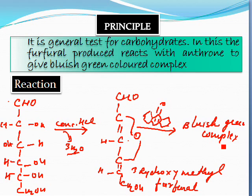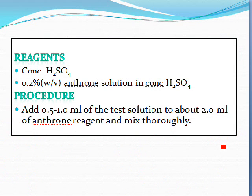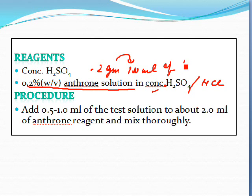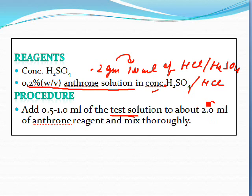The material required for the anthrone test is a 0.2% weight-by-volume anthrone solution in concentrated sulfuric acid or HCl — meaning 0.2 grams of anthrone dissolved in 100 ml of sulfuric acid or HCl. For the procedure: add 0.5 to 1 ml of the carbohydrate test solution to 2 ml of anthrone reagent.